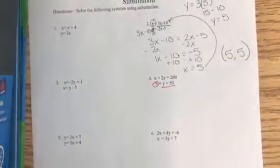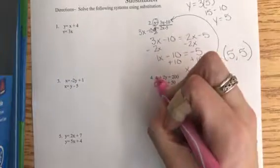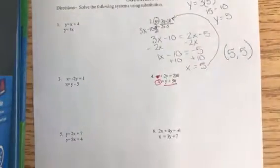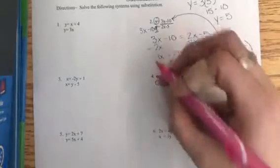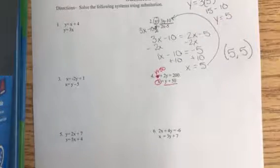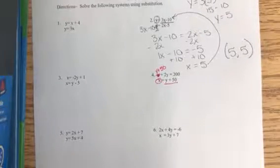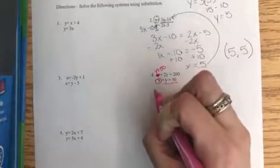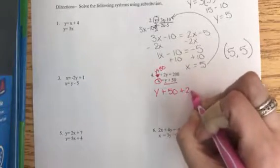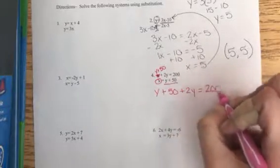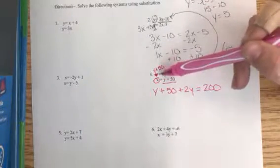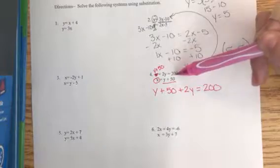Okay, we're going to go to the other equation and we're going to cross out the letter that we circled. So I circled an x, so I'm going to cross out the x and in its place I'm going to put y plus 50. So I now have an equation that says y plus 50 plus 2y equals 200, right? I'm just reading straight across here: y plus 50 plus 2y equals 200.